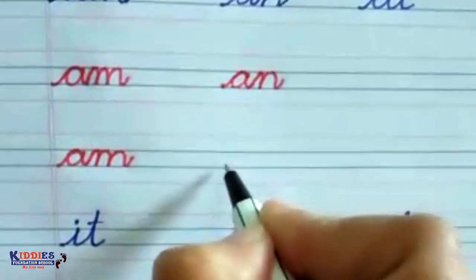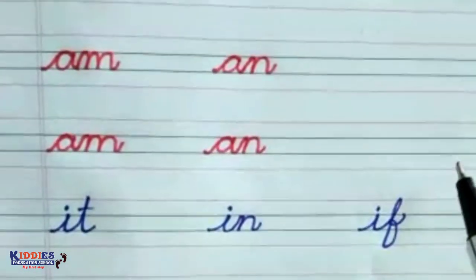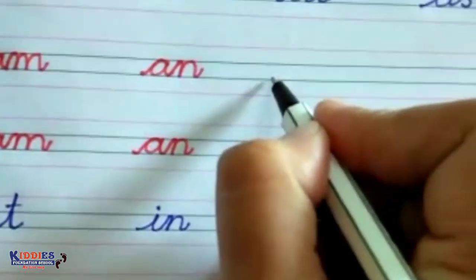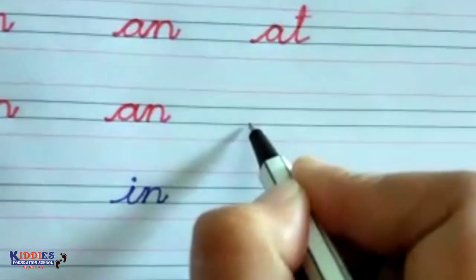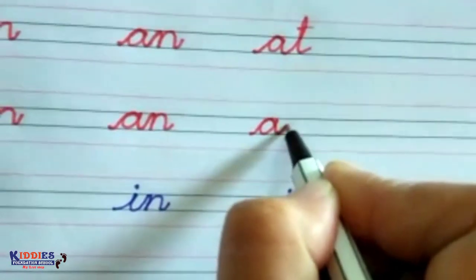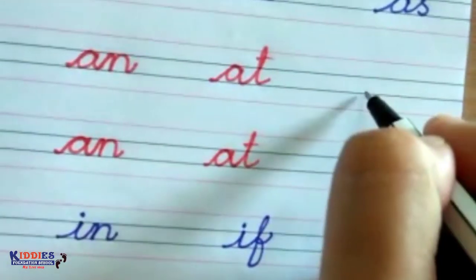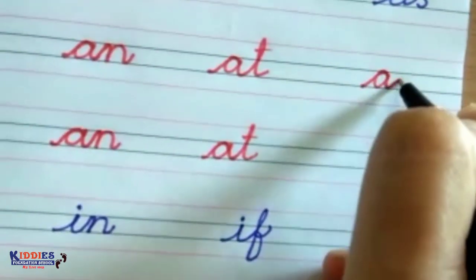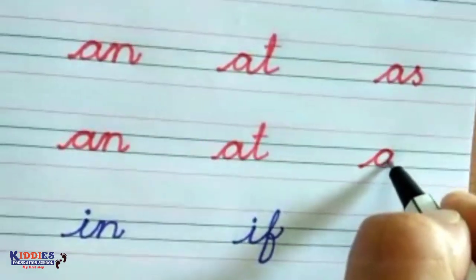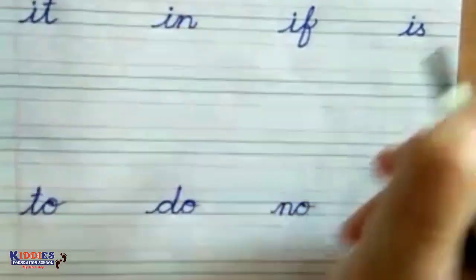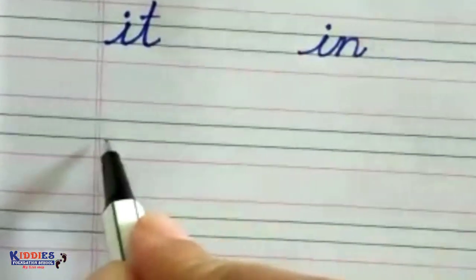Once again: first write 'a', then 'n'. Then the word 'at' — write 'a' then 't'. Once again: 'a' then 't', that's 'at'. Then 'as' — write 'a' then 's', connecting the two letters to form 'as'.